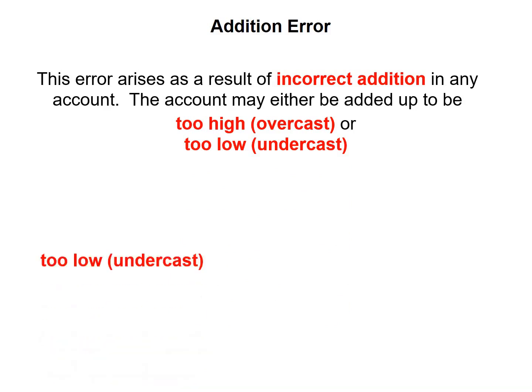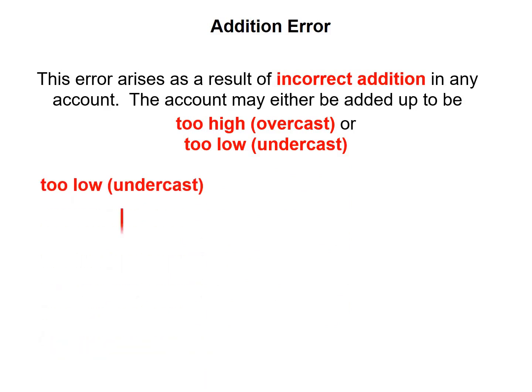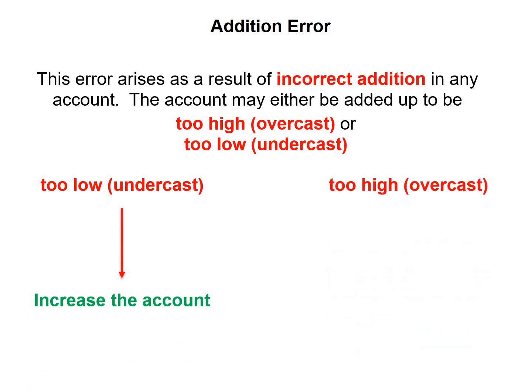If we have an undercast, that means we should increase the account. And if we have an overcast, that means we added up too much, so we should decrease the account.